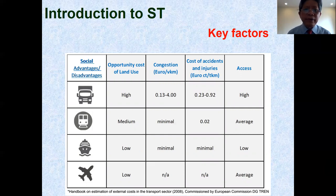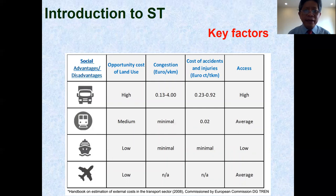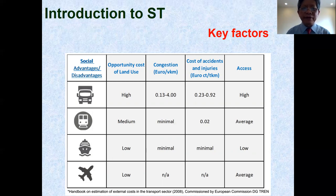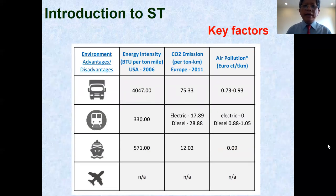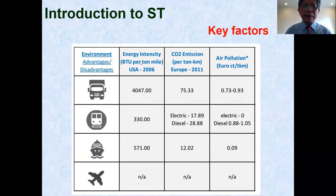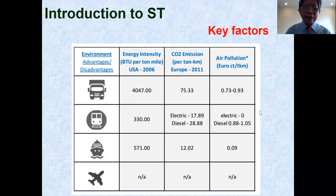For the social aspect of different kinds of traffic means, similar to the economic aspect, different kinds of traffic means have different advantages and different disadvantages. And these are the key factors for the same kinds of traffic means with parameters such as energy intensity, emission of carbon dioxide to the atmosphere, and pollution. From the table you can also see that different kinds of traffic means have different advantages and disadvantages in terms of the environmental aspect.